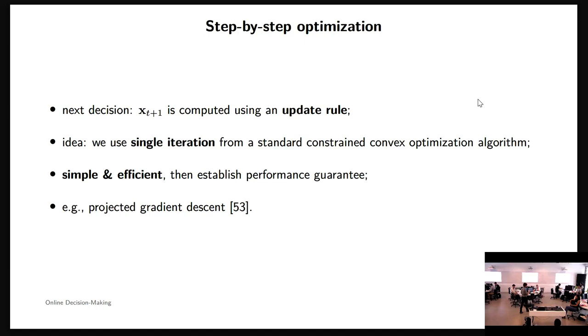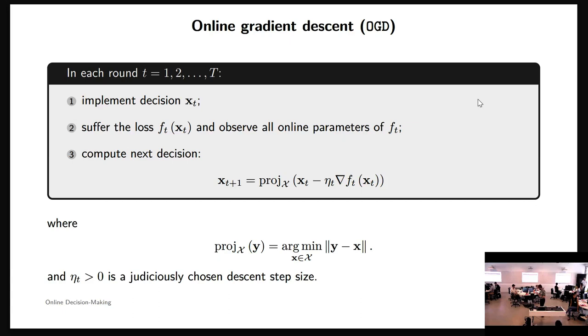So let me present the canonical online optimization. I've got a theme, the so-called Online Gradient Descent, OGD. It's as simple as that. It's based on the projected gradient descent step. So we implement decision x_t, fantastic. We observe, we suffer the loss, observe all the parameters, refer to the red scribble over there, and we compute the next decision. And that's my step. One step toward the maximum decrease direction with the step size that is judiciously chosen. I'll get back to that.